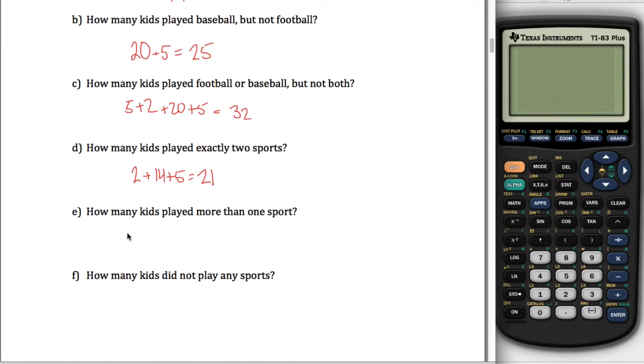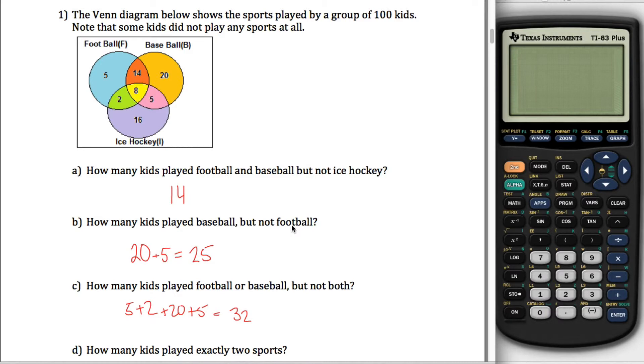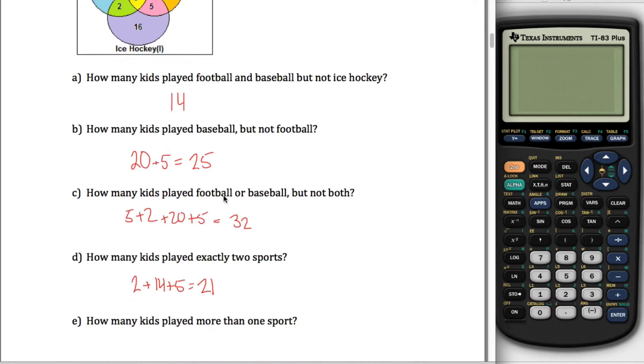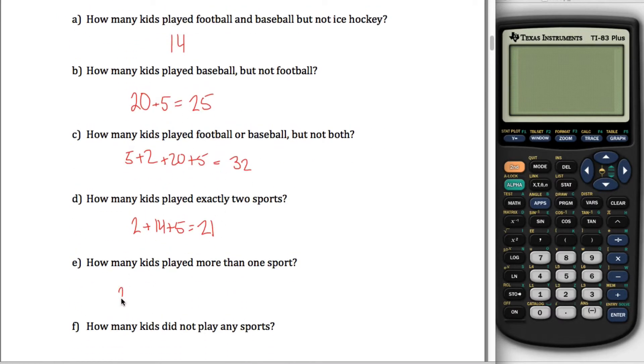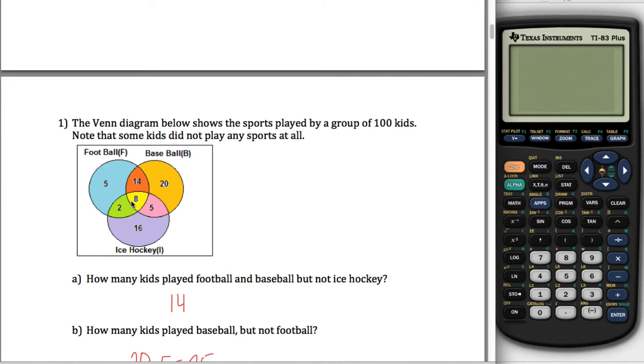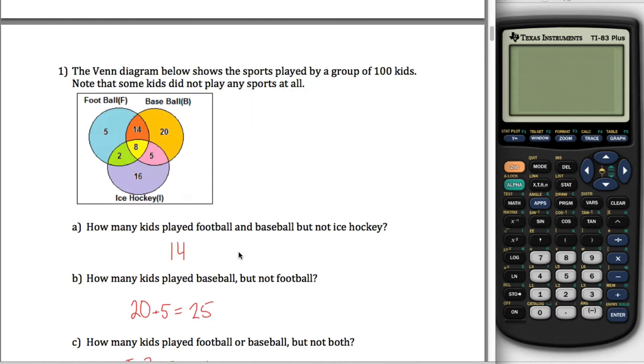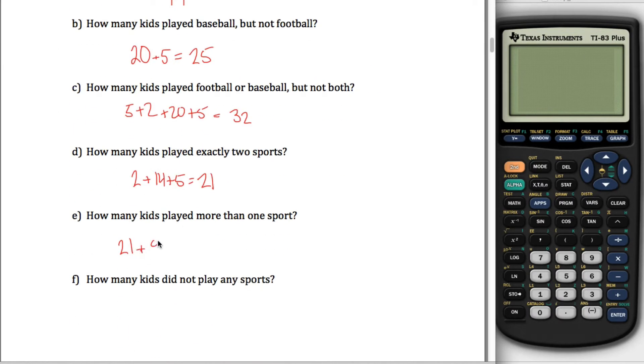Finally, almost finally, how many kids played more than 1 sport? Well, I think the easiest way to do that is we know how many kids played 2 sports, 21. We just figured that out in Part D. So if you played more than 1 sport, that means either you played 2 sports or you played 3 sports. 21 kids played 2 sports. What about 3 sports? Well, only these 8 kids right here played all 3 sports, so 21 plus 8 gives me the 29. Other ways you could figure out this number, I saw several different answers, correct answers, different methods of getting there. And they're all great. Lots of different ways you can do it. Here's one.